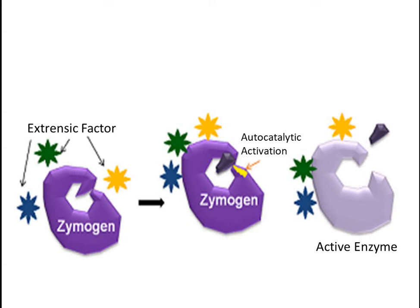These enzymes have a particular region which restricts them from performing a particular reaction, but some extrinsic factors are responsible for removing that region so the enzyme becomes active. For example, in the presence of proteins, the inactive pepsinogen will convert into pepsin, chymotrypsinogen into chymotrypsin, or pro-carboxypeptidase into carboxypeptidase A or carboxypeptidase B.